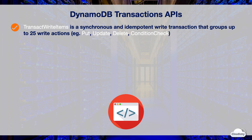The put action initiates a PutItem operation to create a new item or replace an old item. The update action initiates an UpdateItem operation to modify an existing item or add a new item if it doesn't exist. The delete action initiates a DeleteItem operation to delete an item in the table. The condition check action checks if an item exists or if the condition of a specific attribute is satisfied. These actions are completed atomically so that either all of them succeed or none of them succeed.